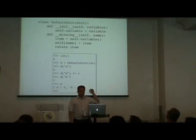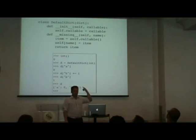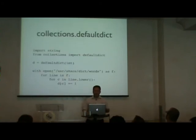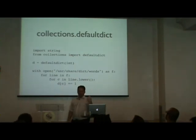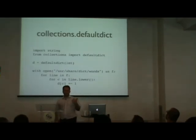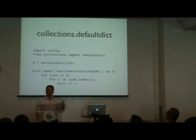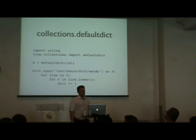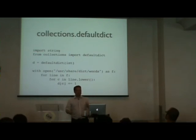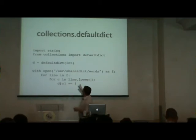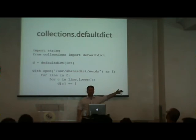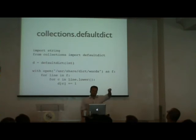But __missing__ was actually designed for defaultdict. The defaultdict class in the collections module takes a callable and calls it whenever a missing key is accessed. int() with no arguments returns zero, so passing int as the callable to defaultdict gives you a dictionary that defaults to zero. You can then just say d[c] += 1 without needing 'd.get(c, 0) + 1'. This turns out to be very useful.